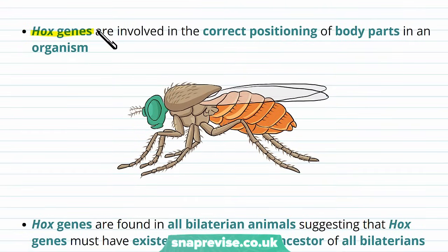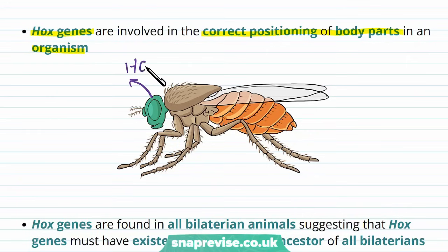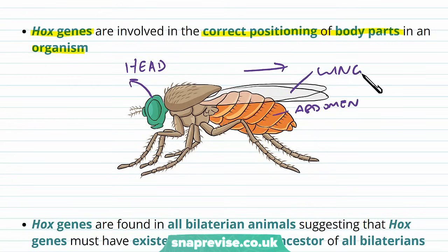The purpose of Hox genes is to set up the correct positioning of body parts in an organism. For example, the head is towards the front of the body, the abdomen is in a particular position, a fly's wings have to be on the back and paired, and the legs have to face down to the ground. There's a lot of arrangement of the body involved — more than we might think.